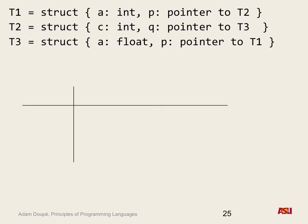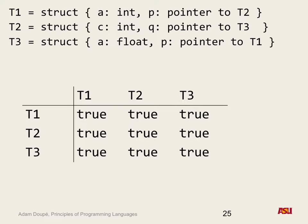In our table we have three types — T1, T2, T3 as both rows and columns. We start the algorithm by initializing everything to true. Is the diagonal ever going to change? No — everything is going to be structurally equivalent to itself. A type is always structurally equivalent to itself. Also, the table is symmetric: if T3 and T1 are not structurally equivalent, we also know T1 and T3 are not. So we only need to check one half of the table.